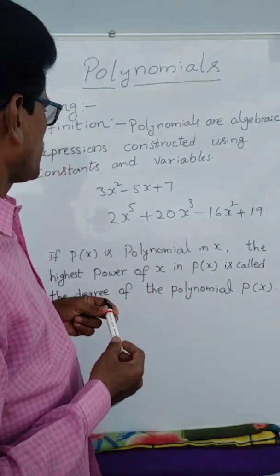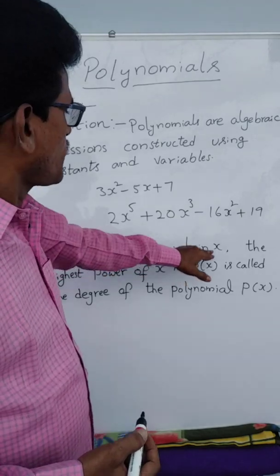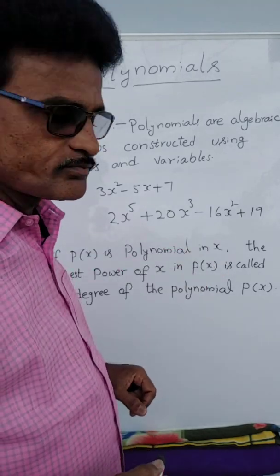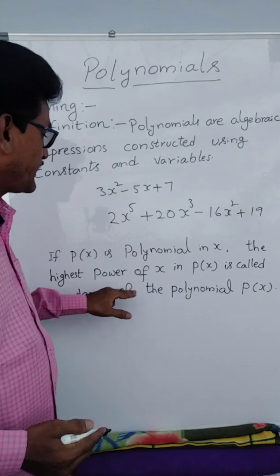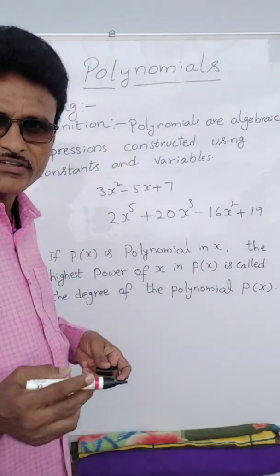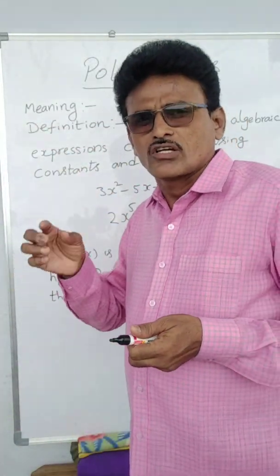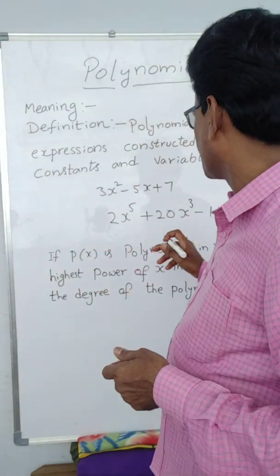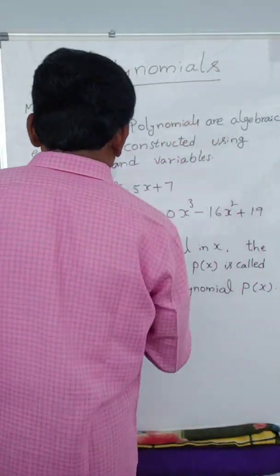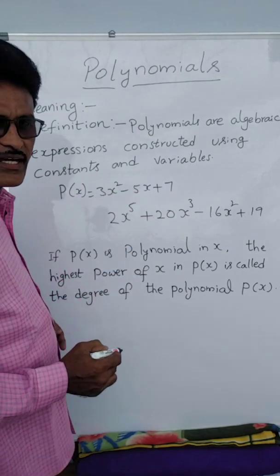If p(x) is a polynomial in x, the highest power of x in p(x) is called the degree of the polynomial. How to find the degree of the polynomial? Suppose 3 terms or 5 terms are there — observe the highest power of the variable. Suppose here I will write p(x) as this polynomial.